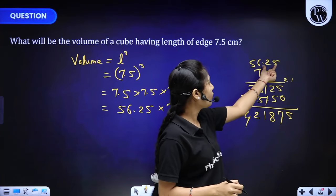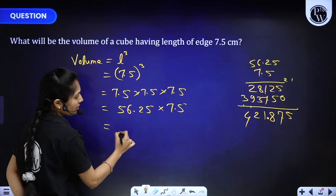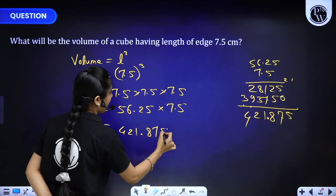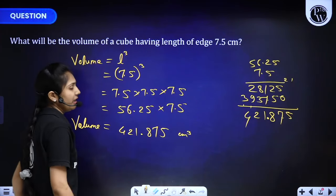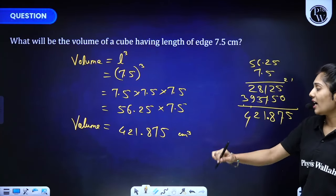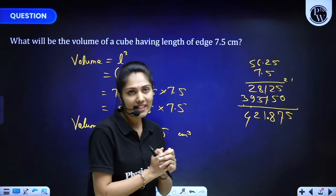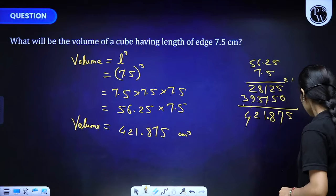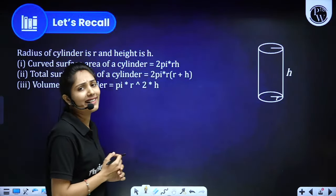Accounting for 3 decimal digits total, the volume is 421.875 cm³. This is the required volume of our cube. So these topics we have already studied in class 8 standard.